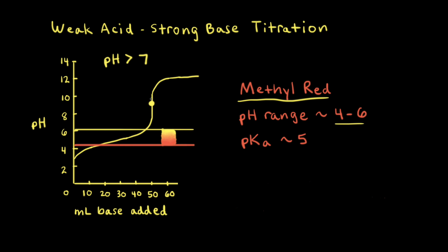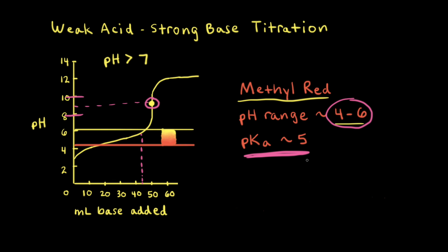However, the pH of the equivalence point for this titration is somewhere between 8 and 10. Therefore, if we used methyl red and stopped the titration when the color changed, we'd be stopping too early — somewhere before the equivalence point. So methyl red would not be a good choice for this titration. Thinking about pKa values, methyl red has a pKa of approximately 5. The goal is to match the pKa value as closely as possible to the pH of the equivalence point, but since the equivalence point is between 8 and 10, that's too far from 5. So methyl red is not a good fit.